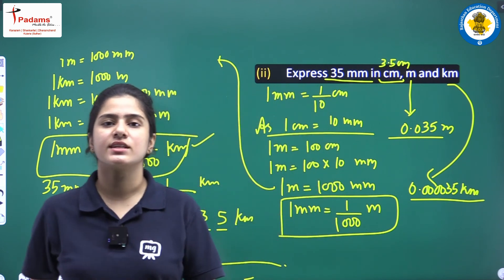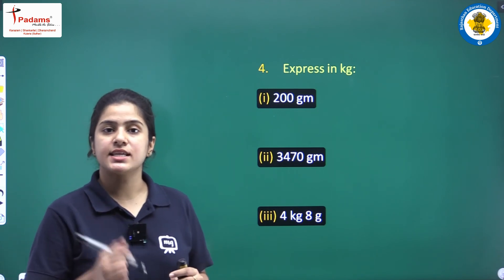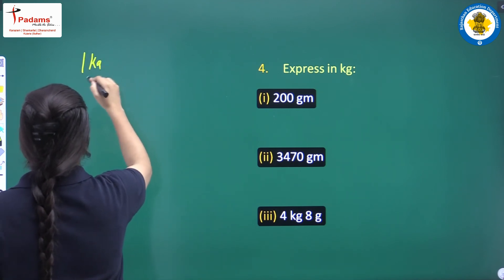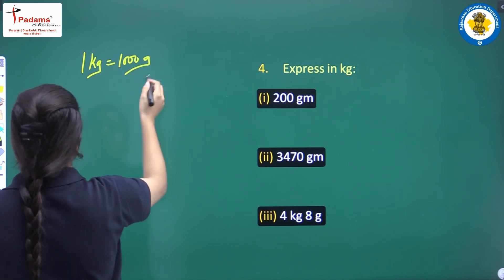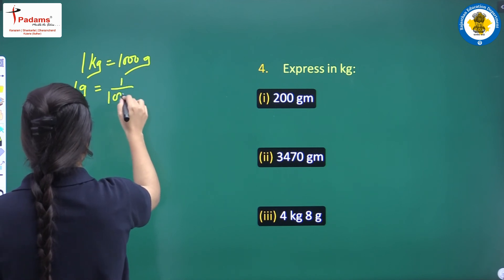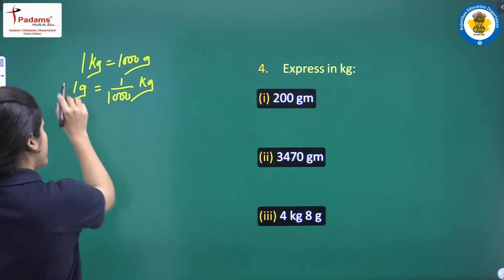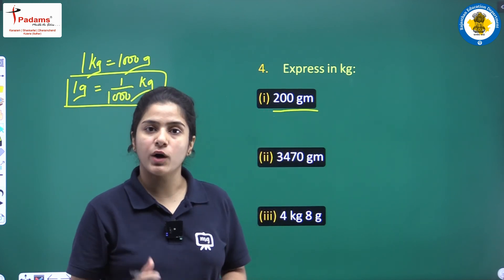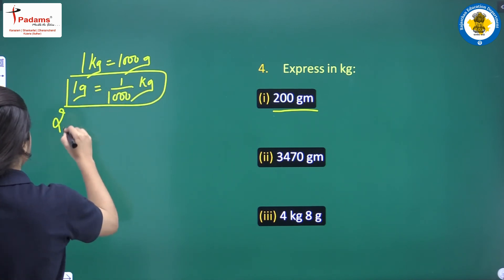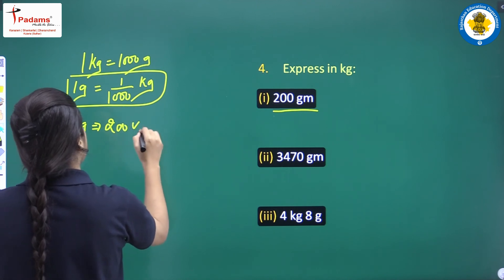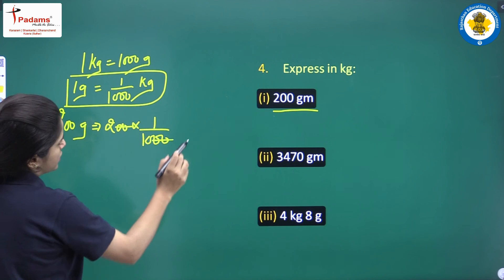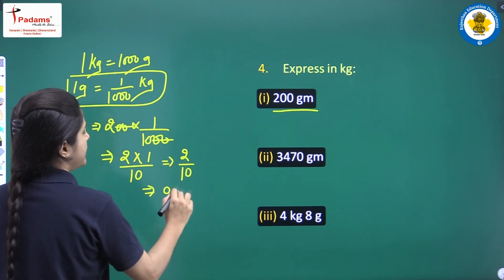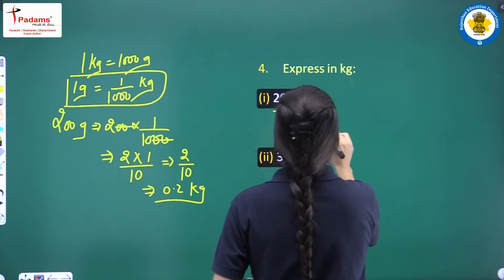Question number 4: express in kilograms. The values are given in grams. We know 1 kg equals 1000 grams, so 1 gram equals 1 upon 1000 kg. First: 200 grams. 200 into 1 upon 1000 — cancel the zeros: 2 into 1 upon 10, which is 2 upon 10. The answer is 0.2 kg.